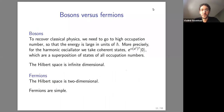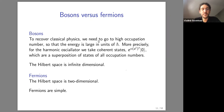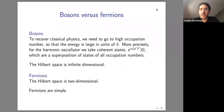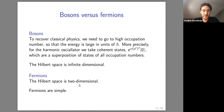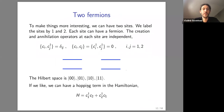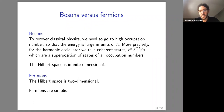To summarize: for bosons, the Hilbert space is infinite-dimensional and we recover classical physics by going to high occupation numbers, typically using coherent states. For fermions, there is clearly no classical limit because the Hilbert space is only two-dimensional — we can't go to high occupation numbers. On the other hand, fermions are simple precisely because the Hilbert space is only two-dimensional. That's why we'll be discussing fermions.